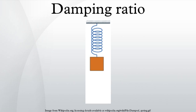The damping ratio is a parameter, usually denoted by zeta, that characterizes the frequency response of a second-order ordinary differential equation. It is particularly important in the study of control theory and the harmonic oscillator. The damping ratio provides a mathematical means of expressing the level of damping in a system relative to critical damping.